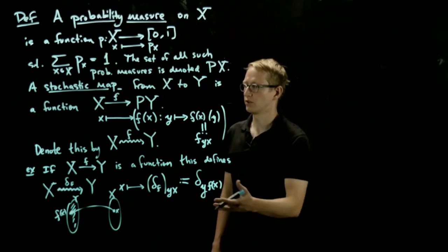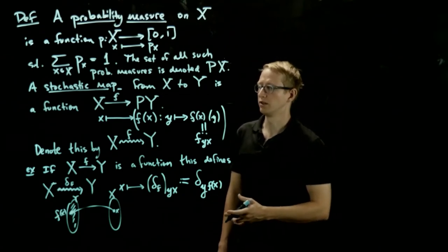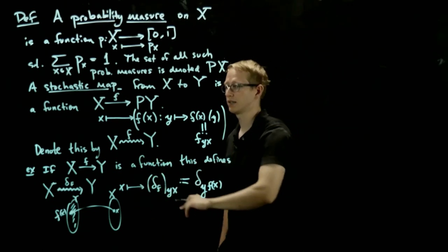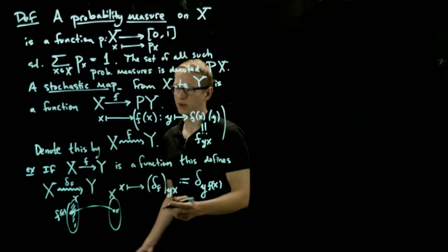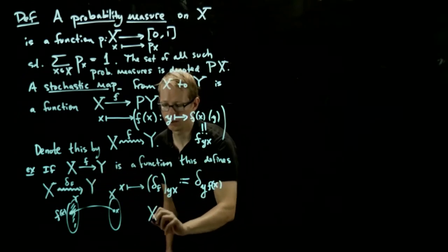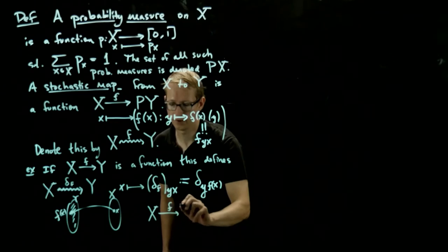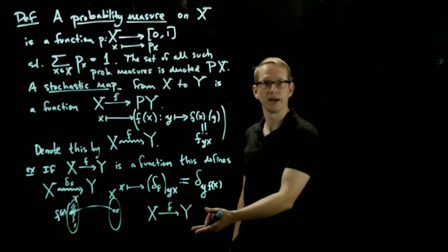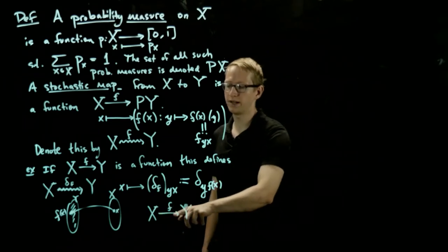So we notice that there's this close relationship between functions and stochastic maps. In fact, functions are special kinds of stochastic maps. And instead of writing delta f all the time, we'll simply write xf, and we will think of this as a stochastic map, but we'll write it as a straight arrow.